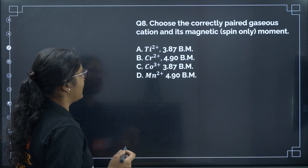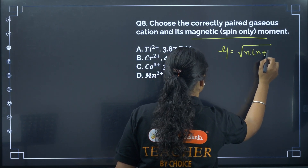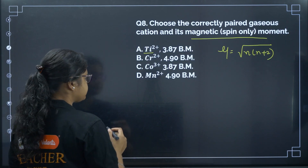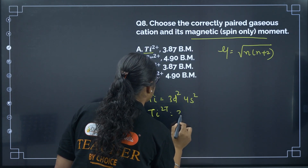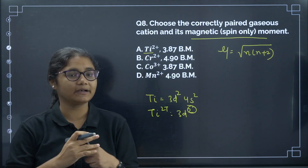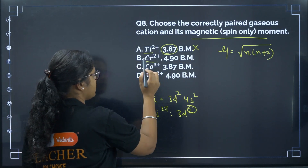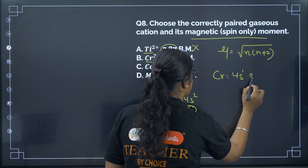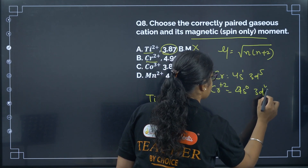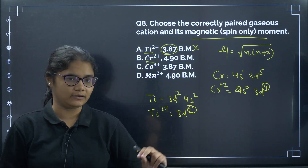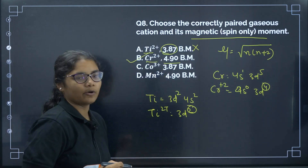Question 8: Choose the correctly paired gaseous cation and its magnetic moment. The formula for magnetic moment is √(N(N+2)). For Ti²⁺ with 2 unpaired electrons, the magnetic moment is about 2.8, not 3.87. For Cr²⁺: chromium's configuration is 4s¹3d⁵, so Cr²⁺ is 3d⁴ with 4 unpaired electrons, giving a magnetic moment of approximately 4.89, which rounds to 4.9. The correct answer is option B.